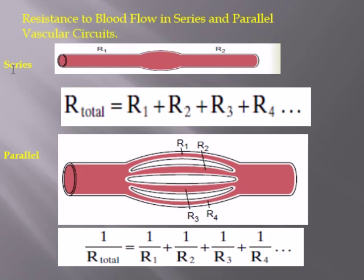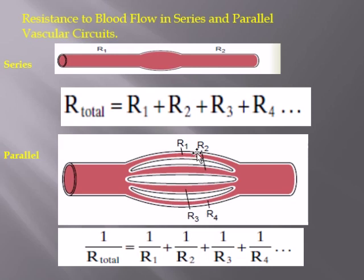This is similar to electronics and physics: resistance in series simply adds up — R_total = R1 + R2 + R3 + ... + Rn. However, when the circuit is in parallel, as in capillaries, the total resistance is the reciprocal of the sum of reciprocals: 1/R_total = 1/R1 + 1/R2. So, in series the resistances add up, and in parallel the resistances reduce.